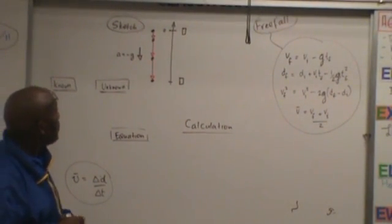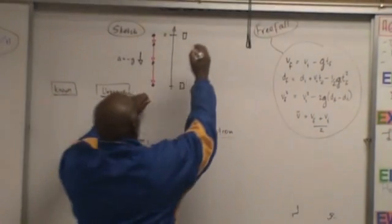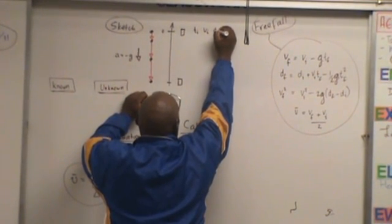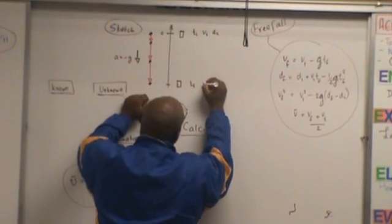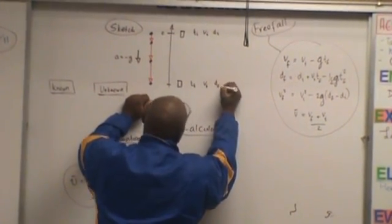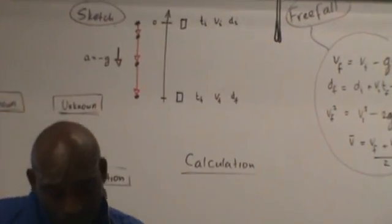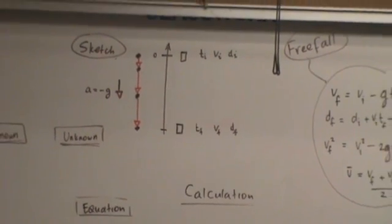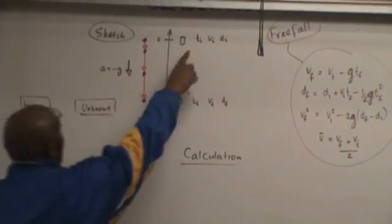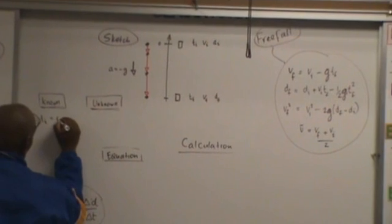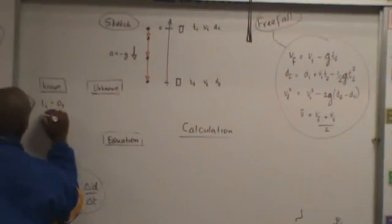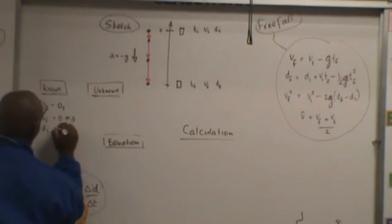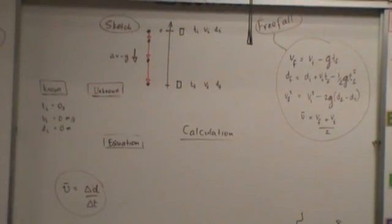So, let's see what we know. Well, just like we did in the other problems, we have T initial, V initial, D initial, right? T final, V final, D final. So, let's see what we know. What do we know? It starts here. Start up here. What do you know up here? The initial time is zero. The time and the velocity initial is zero. Everything is zero. You're right. Everything up there is zero. Everybody understand that? Yeah.